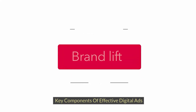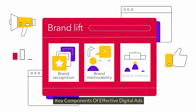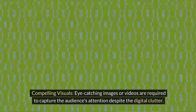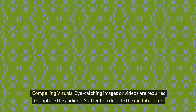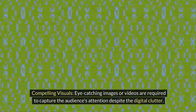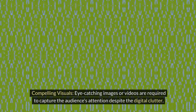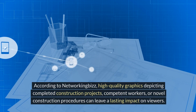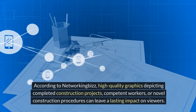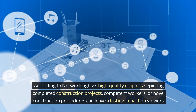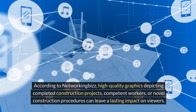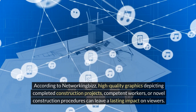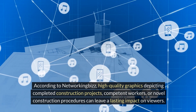Key Components of Effective Digital Ads. Compelling visuals — eye-catching images or videos are required to capture the audience's attention despite the digital clutter. High-quality graphics depicting completed construction projects, competent workers, or novel construction procedures can leave a lasting impact on viewers.